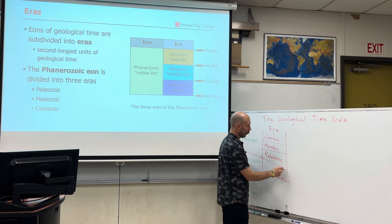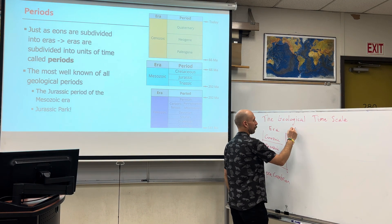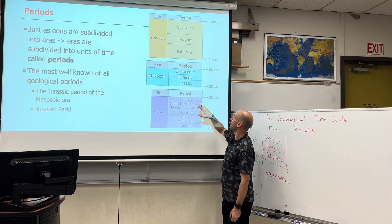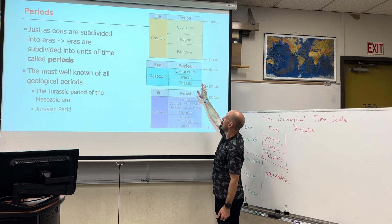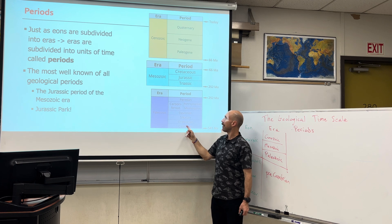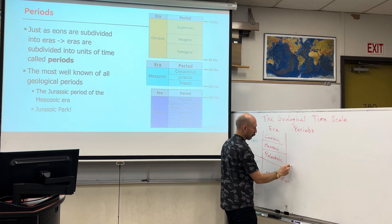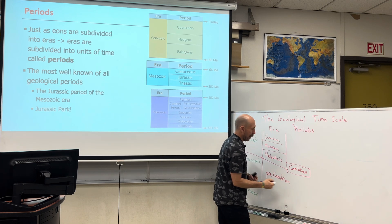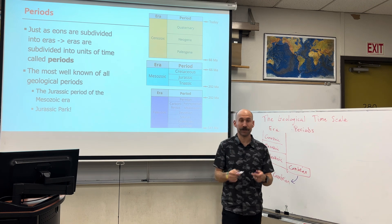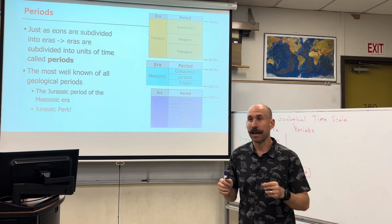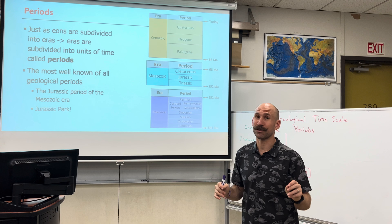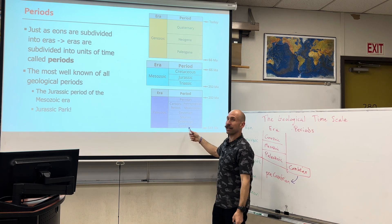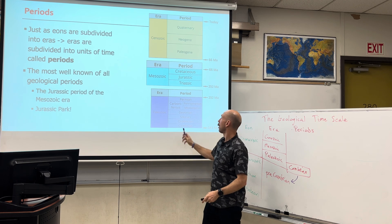Now we move to periods, where we dial in a little bit closer. There's more complexity and different types of life. The age of the dinosaurs was during the Mesozoic. The Cambrian is the oldest period of the Paleozoic — everything before it is the Pre-Cambrian. During the Cambrian, complex multicellular life with hard parts exploded on the scene. We have a lot of fossils that start to appear, and there was a massive diversification event. It's actually called the Cambrian Explosion.